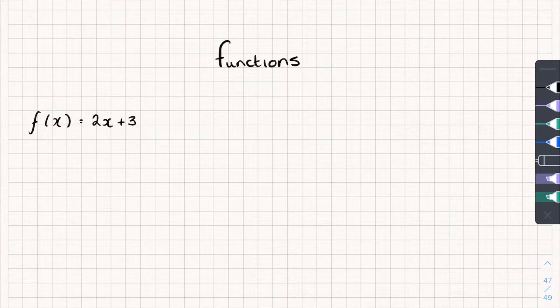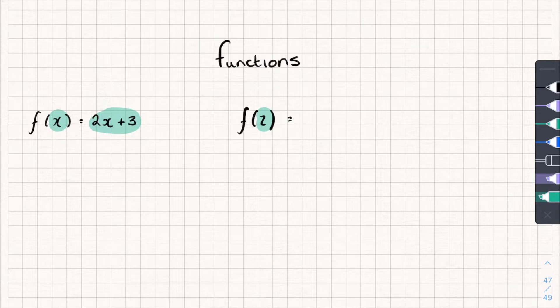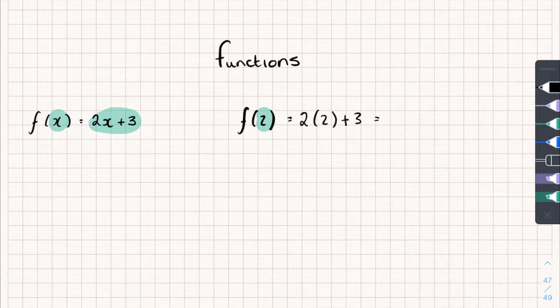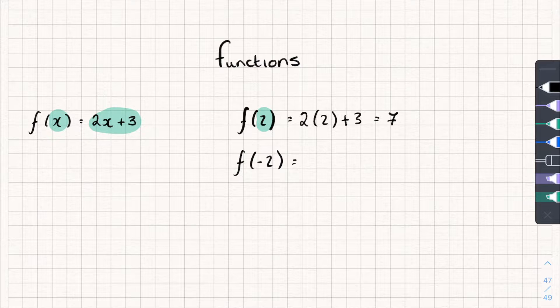So in an exam, you could be asked to evaluate a function at a given point. For example, evaluate the function f of x at the point x equals 2. Or it might be written as work out f of 2. They mean the same thing. And you can see where there was an x originally in the function f of x, I've swapped it out for a 2. So to work this out, all I'm going to do is look at this expression here, and wherever there was an x originally, I'm going to swap it out for a 2. So let's do that. So 2 times 2 plus 3. Well, that gives me 4 plus 3, so 7. Let's work out f of negative 2. So this could be another question. Evaluate the function at the point x equals negative 2. Well, that's going to be 2 times negative 2 plus 3, which is negative 1.